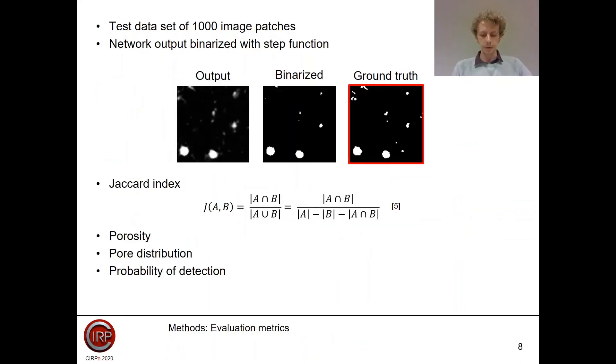Before we dive into the results, I will first explain how we evaluated the quality of our segmentation. After training the network, we segment 1,000 test images and we binarize the output of the network with a step function. Everything below 0.5 becomes 0 and represents material. Everything above 0.5 becomes 1 and represents a pore. We then have two binary images that we can compare. One metric that we used is the Jaccard index, which gives us an overall idea about the quality of the segmentation. We also calculate the porosity, the pore distribution, and the probability of detection to have a better understanding about what is going on with all the different pore sizes.